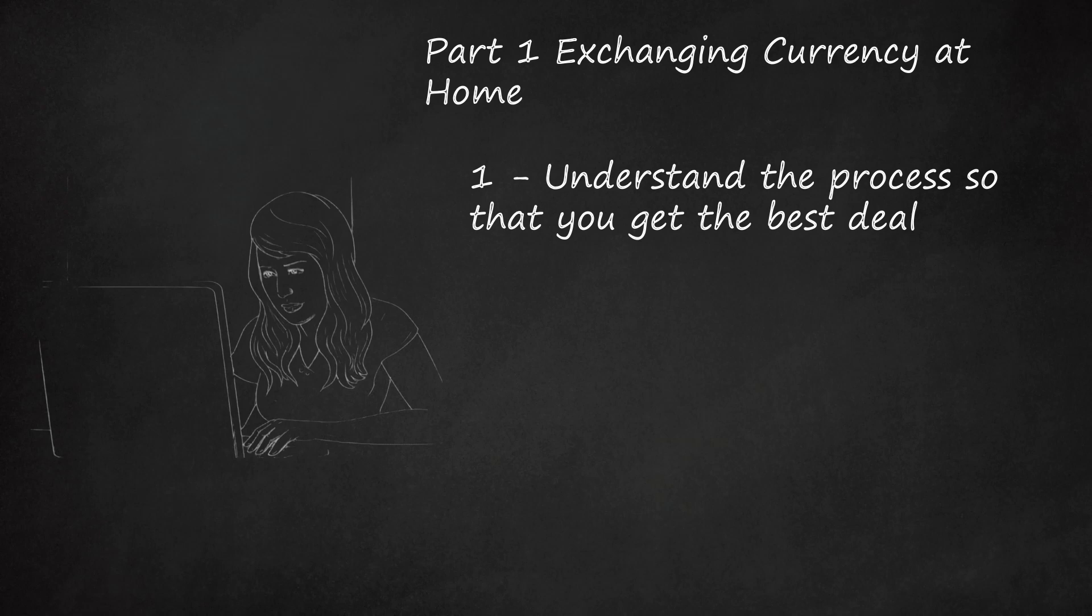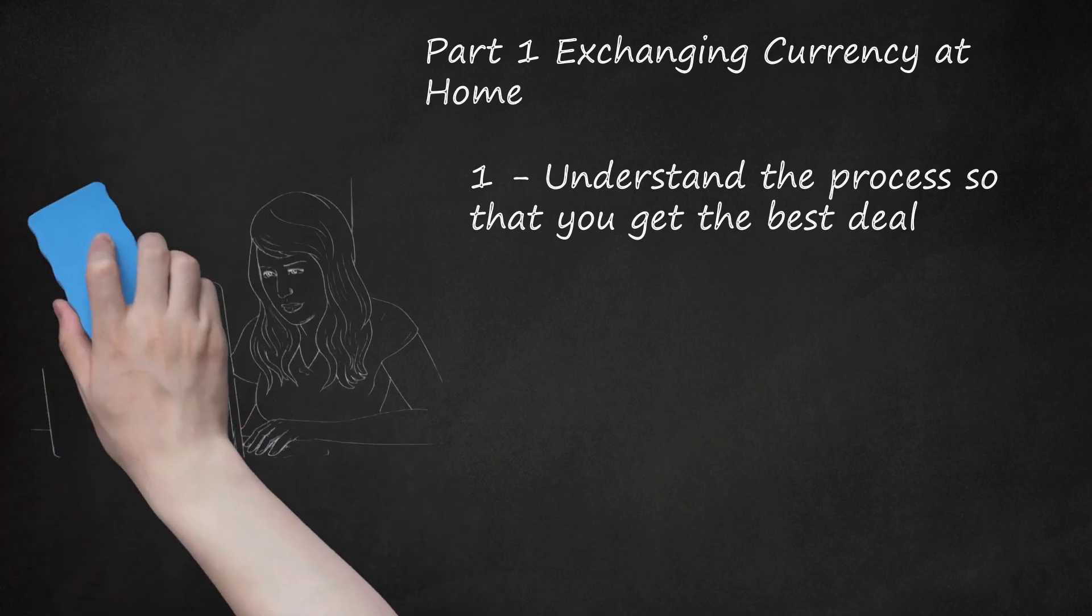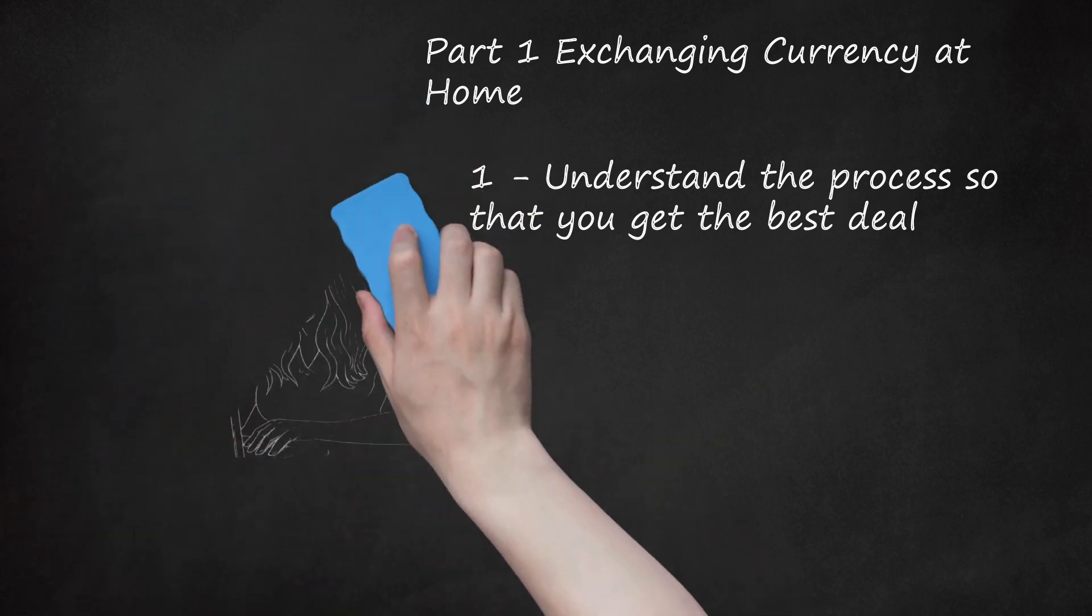Understand that the dollar, for example, being worth less than the euro doesn't have much to do with the cost of items. The relative cost of items is determined by the market in that area. So for example, a banana in the US is much cheaper than a banana in Sweden, even though the dollar is strong compared to krona.